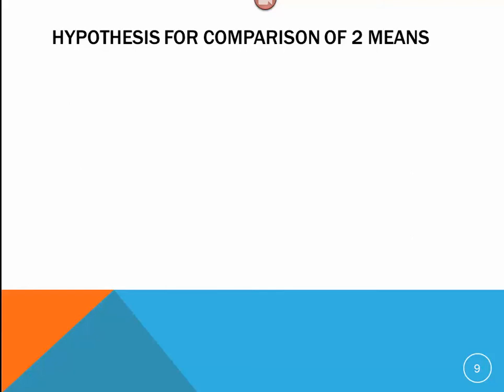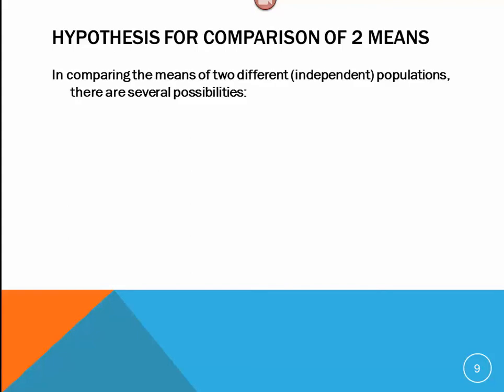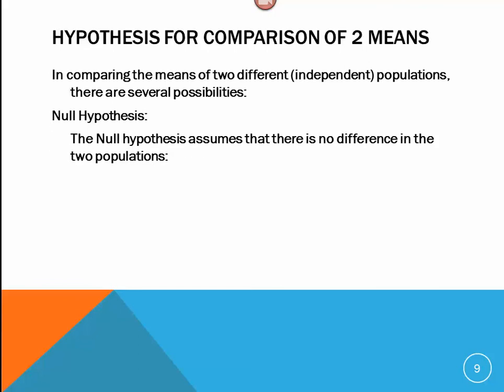However, when we're doing two means and we're dealing with independent populations, there are several ways that we set up our hypotheses. The null hypothesis assumes that there will be no difference between the two populations. And so, we can always write our null hypothesis in a similar way.